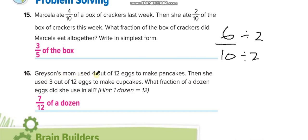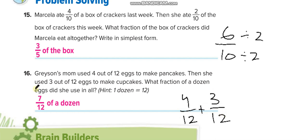Grayson's mom used 4 out of 12 eggs to make pancakes, and then she used 3 out of 12 eggs to make cupcakes. So 4 plus 3 is 7, giving 7 over 12.